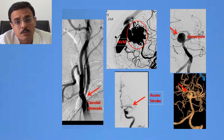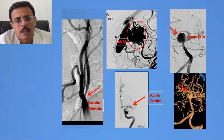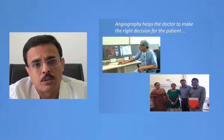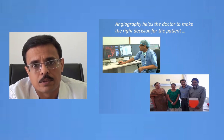Angiography really helps the doctor — whether a neurologist, neurophysician, or neuro-interventionist — to diagnose deadly diseases in an absolutely accurate manner, make the right diagnosis, and determine the right treatment, whether it's carotid artery stenosis, AVMs, aneurysms, or stroke. It enables the right decision for the patient and early recovery. Thank you.